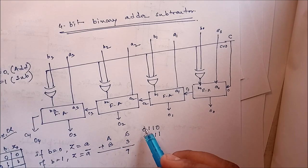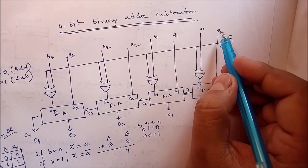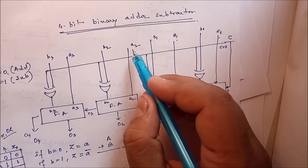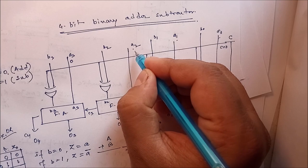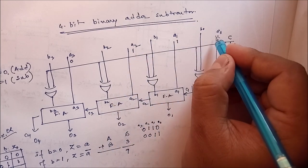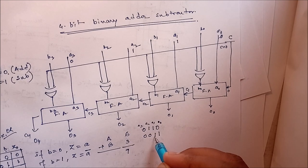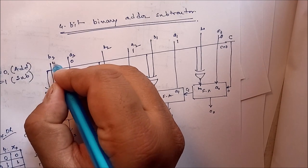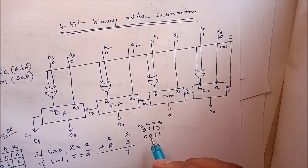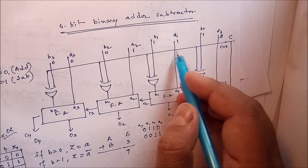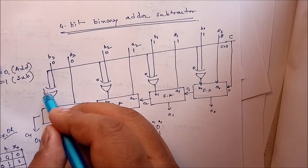So a0, a1, a2, a3 will be 0, 1, 1, 0 (representing 6). And b0, b1, b2, b3 will be 0, 0, 1, 1 (representing 3). Since c is equal to 0, the XOR control input for each bit is 0, 0, 0, 0.